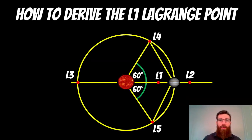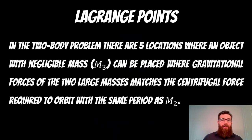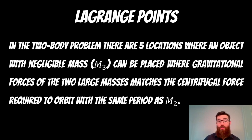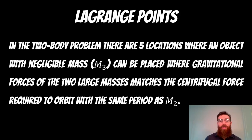Welcome to this video about deriving the L1 Lagrange point. Just a quick recap on what the Lagrange points are. In the two-body problem, you've got five locations where an object with negligible mass can be placed, where the gravitational forces of the two larger objects are going to match the centrifugal force required to orbit with the same period as those two bodies.